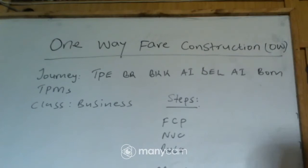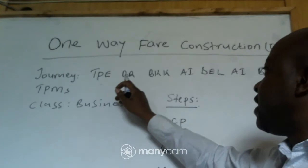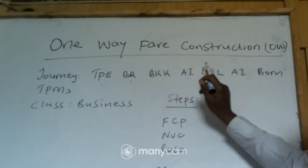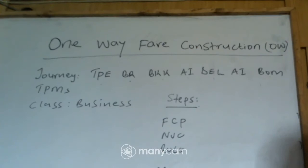So if you look at this journey here, we have been given this journey: we have Taipei, then we have Dakar, then we have Bangkok, we have Dakar, we have Delhi, we have Dakar, and then we have Mumbai, which is in India.